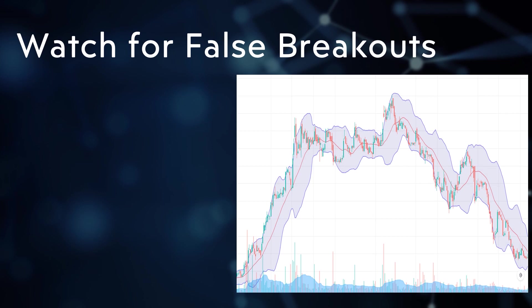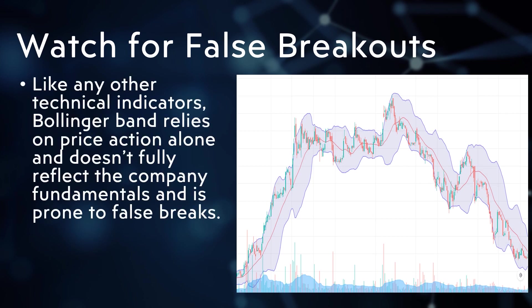Watch out for false breakouts, as Bollinger Bands, like any technical indicator, only interpret price action and not the fundamental change of the asset. Breakouts are not 100% guaranteed — there are false breakouts. In this example, the price breaks out of the band only to start a downtrend. In such cases, always follow your stop-loss strategy.